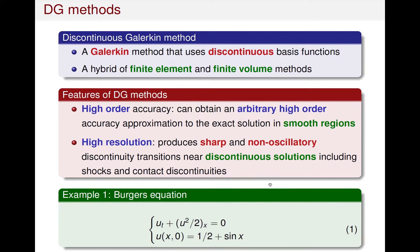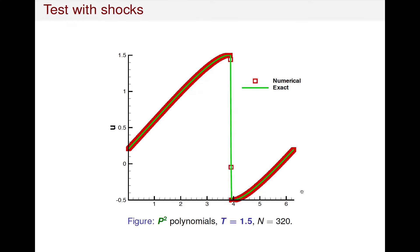To better understand these two main features, let us look at two numerical examples. The first is the Burgers equation, the scalar nonlinear hyperbolic conservation law u_t plus (u²/2)_x equals zero, with initial condition one-half plus sin(x). From characteristic theory, the exact solution will develop a shock at t equals one. We use piecewise quadratic polynomials and compute until t equals 1.5 when the solution has already developed a shock. We use the solid line to denote the exact solution and the red squares to denote the DG solution. From the figure, we can see that we get a good approximation in smooth regions, and also a sharp and non-oscillatory transition near the shock, which is very nice.